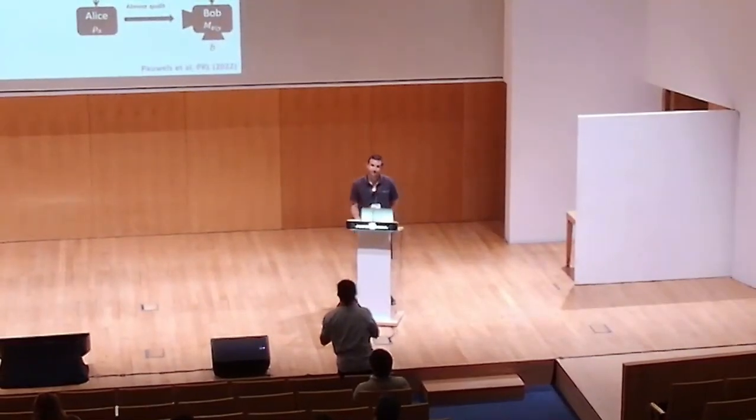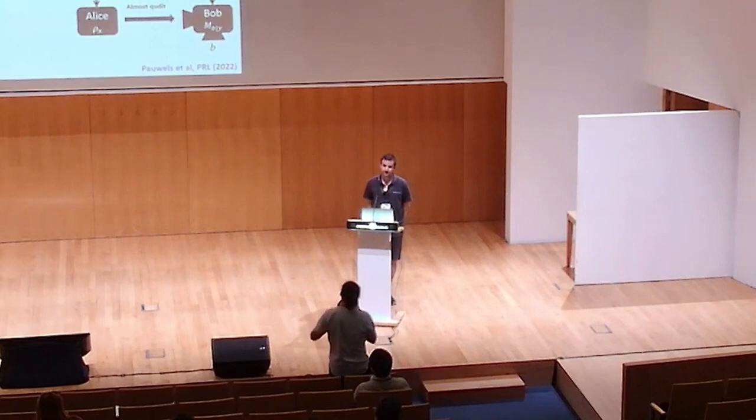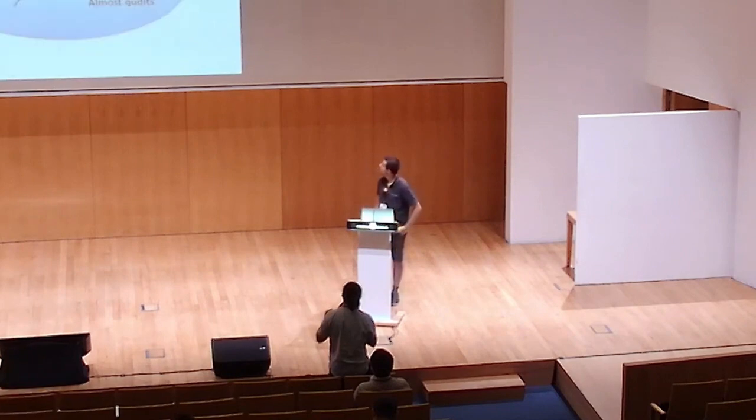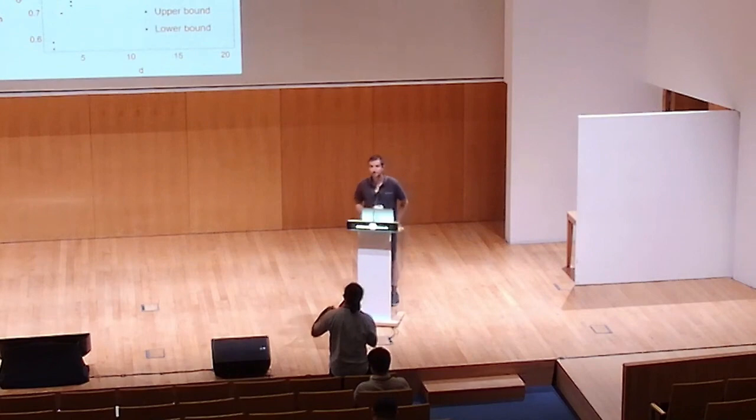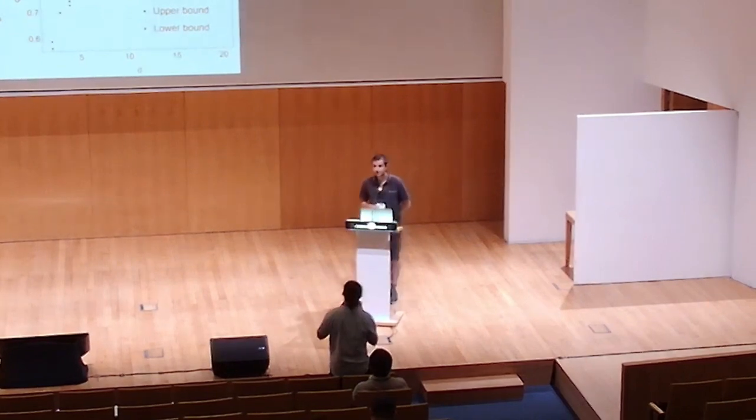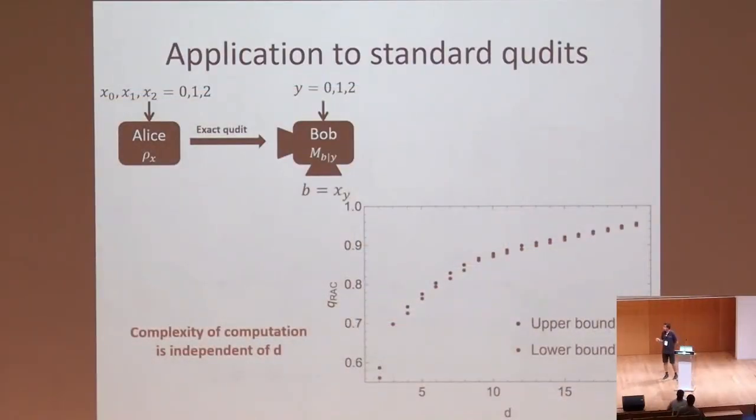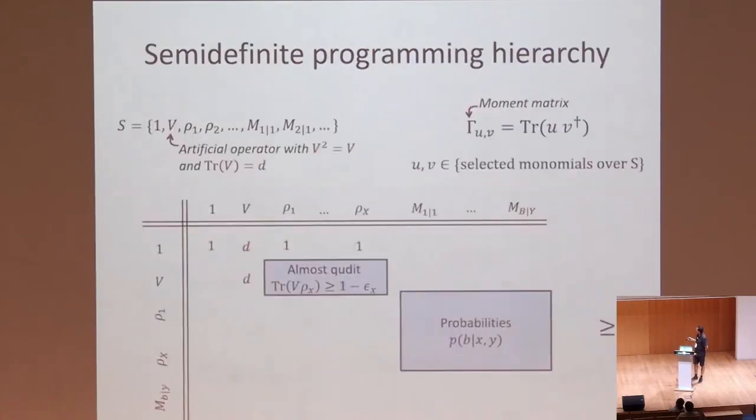You mentioned that the computational cost for d equals 20 is as equal to d equals 2. This is counterintuitive. Why is it the same? Yeah, so in typical methods, if you have a larger dimension, you have to have more variables to represent the larger space, and hence you have more complexity. But here, when we construct this, you see that the dimension is actually entering as a specific number in this matrix. So the dimension is the trace of this auxiliary operator that we made up. If we want to tune up the dimension, we can simply change the numbers we have here. So they enter as linear constraints on the matrix, instead of expansions of the matrix. And hence, the number of variables and the size remains constant.